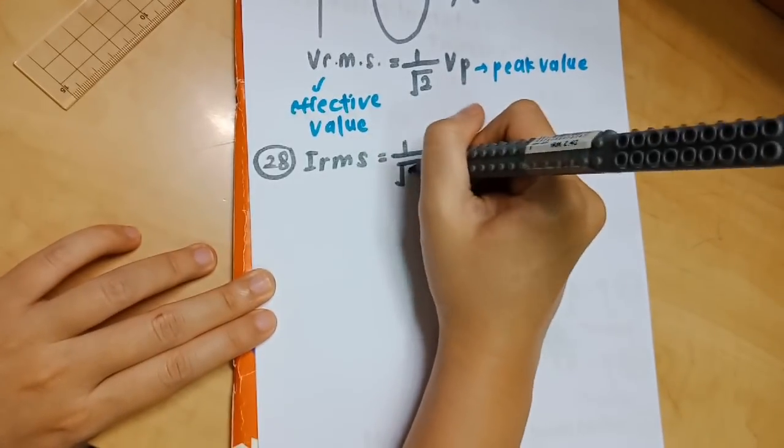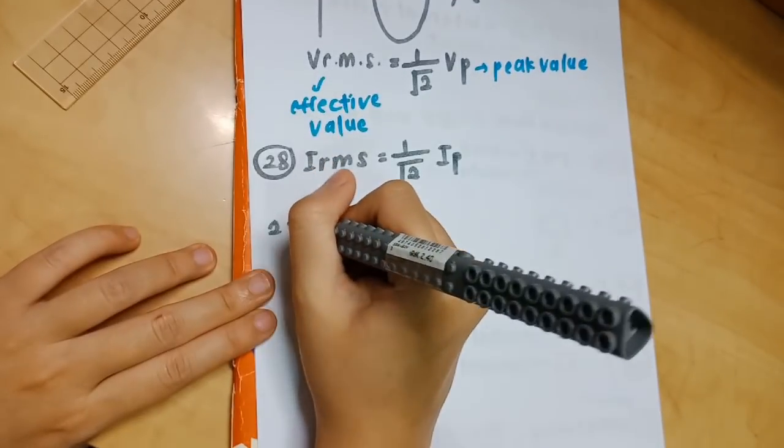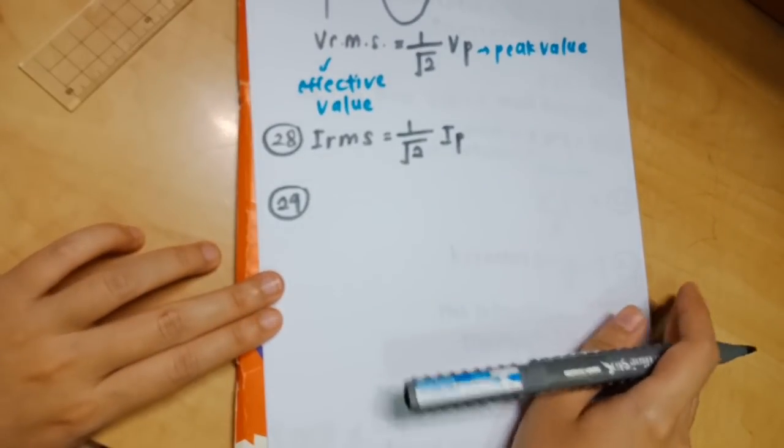Number 28, similarly: IRMS equals 1 over square root 2 times IP.